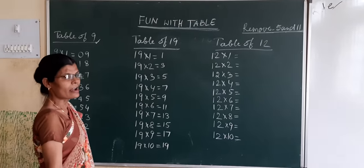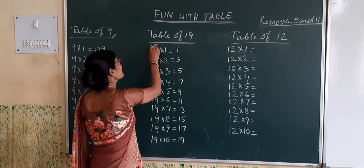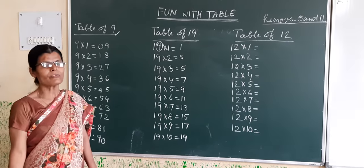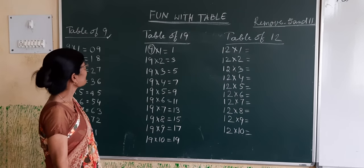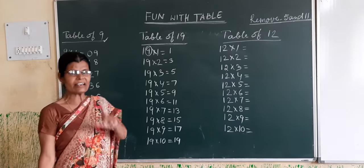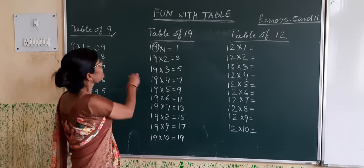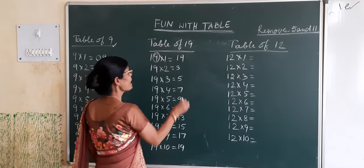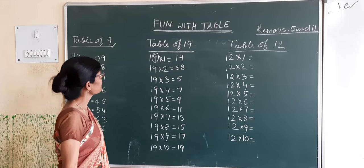Now see the table of 9. Read the table of 9. We are familiar with the table of 9. That's why we read the table of 9 and write only units. 9 ones are 9, write 9. 9 twos are 18, write 8.